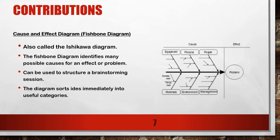The Cause and Effect Diagram, also known as the Fishbone Diagram because of its shape, and the Ishikawa Diagram. The Fishbone Diagram identifies many possible causes for an effect or problem. It can be used to structure a brainstorming session. The diagram sorts ideas immediately into useful categories.